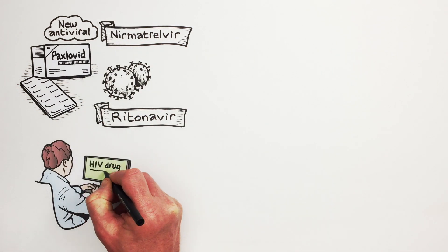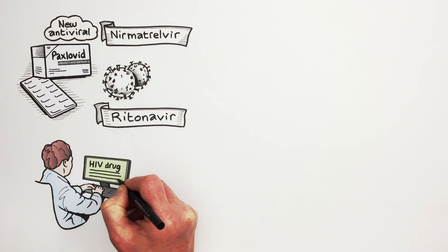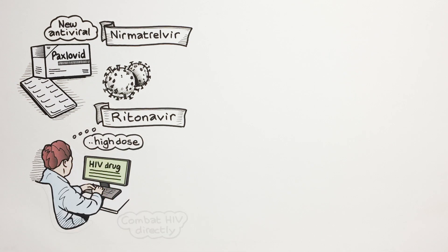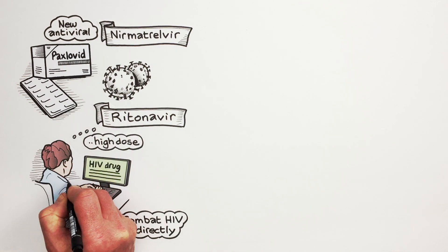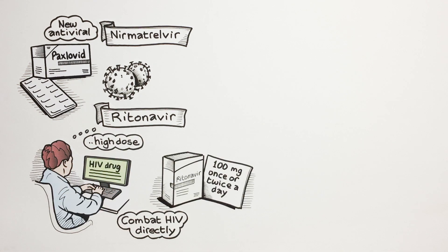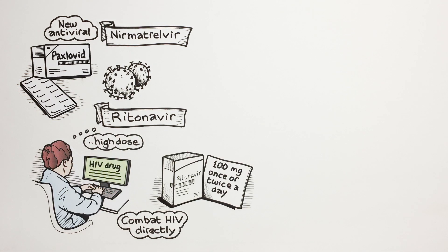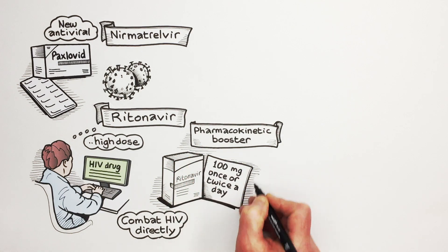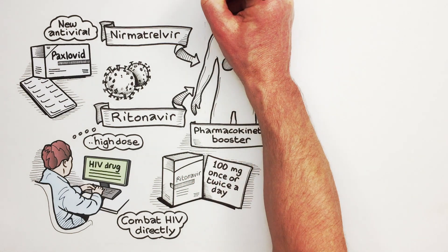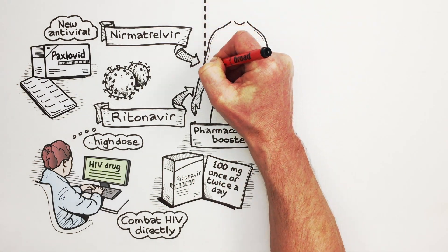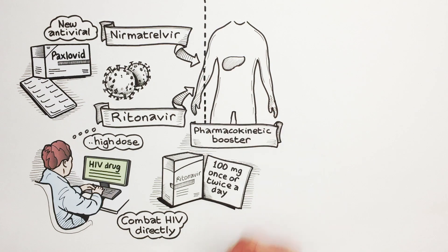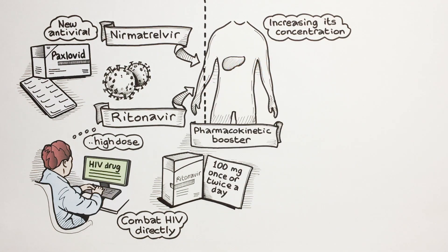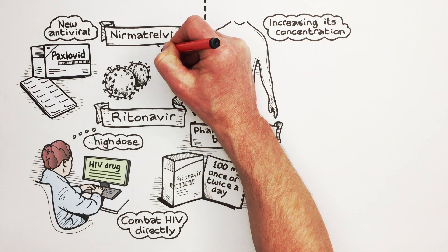Ritonavir is an HIV drug, originally used at a high dose to combat HIV directly, but is now used at 100 mg once or twice a day as a pharmacokinetic booster. Ritonavir blocks the breakdown of Nirmatrelvir in the liver, thereby increasing its concentration in the body so that it is sufficient to inhibit coronavirus.